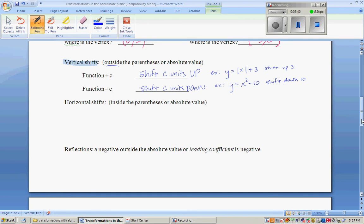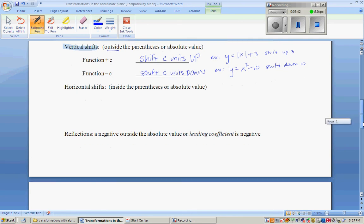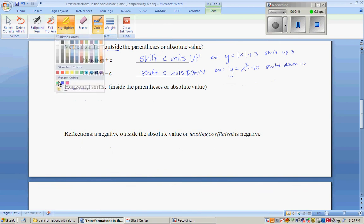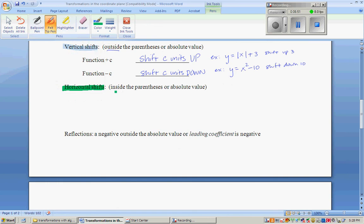So how do you get things to move side to side? Well, you can get a horizontal shift. Let's get a new color here. You can have a horizontal shift if you have a number inside the parentheses or the absolute value with you. So what's going to happen is we're going to put an example right here. If you have Y equals the absolute value of X plus a number, you are going to shift C units left.